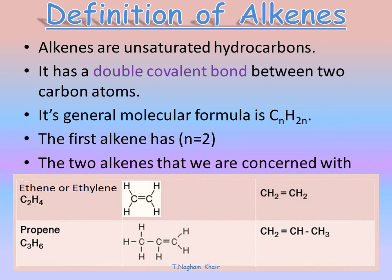Here we have the molecular formula, structural formula, and condensed structural formula of the first two alkenes. The first alkene is called ethene or ethylene. Its molecular formula is C2H4. Here we have the structural formula — you can see the presence of a double bond — and the condensed structural formula.